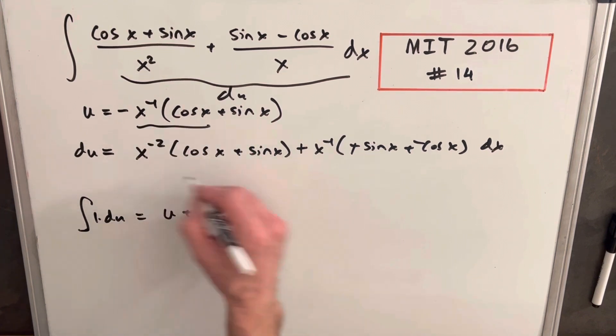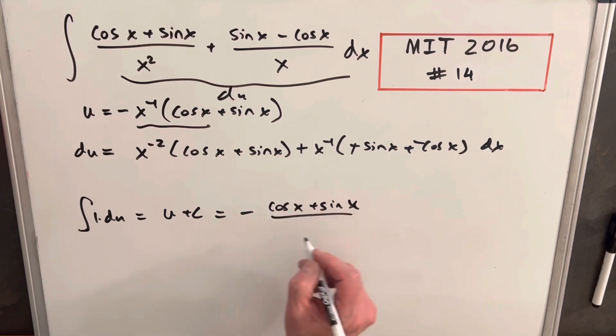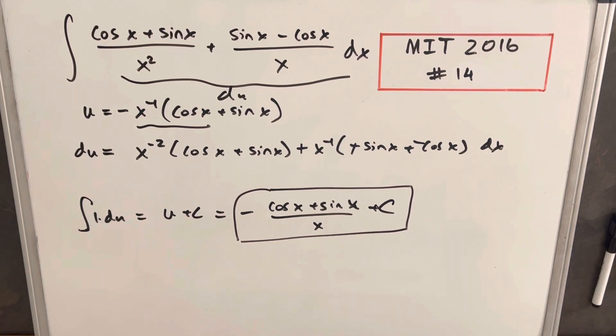It's going to be minus cos x plus sine x over x plus c. And that's it. That's MIT 2016 problem 14. Thank you for watching. Please like and subscribe. Have a good day.